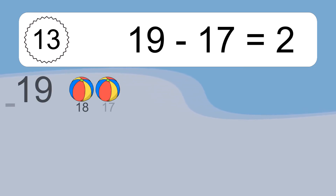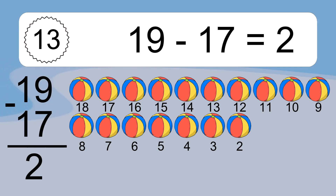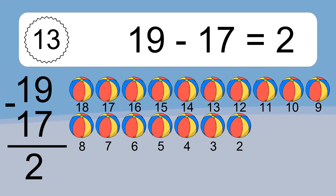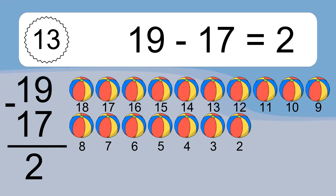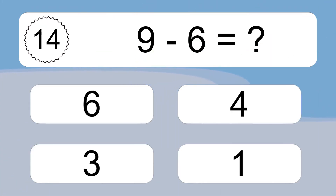19 minus 17 equals what? 19 minus 17 equals 2. Let's count it: 18, 17, 16, 15, 14, 13, 12, 11, 10, 9, 8, 7, 6, 5, 4, 3, 2.